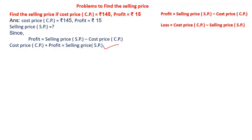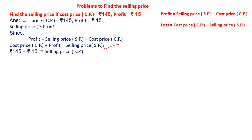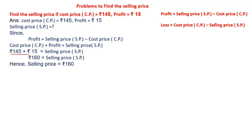Now I am going to substitute the given values. Cost price they are given 145 and profit they are given 15. So: rupees 145 plus rupees 15 is equals to selling price. After adding both amounts I will get the answer as rupees 160 is equals to selling price. Hence selling price we got it as rupees 160.